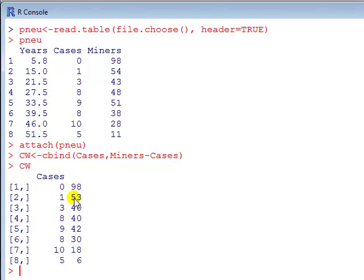So what's the total number of miners exposed to 15 years of that dust? 53 plus 1? 54. Okay, and so on. So this is going to be the dv. And it's arranged like this. So one column counts the number of cases. The column counts the number of not to get the disease.